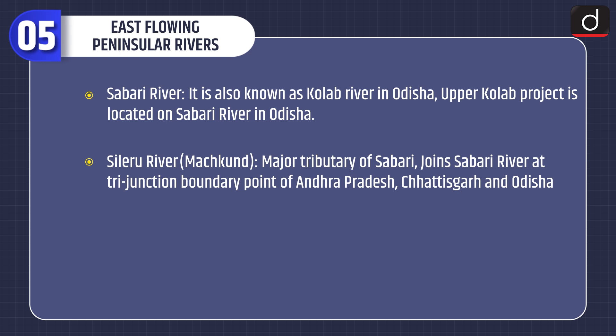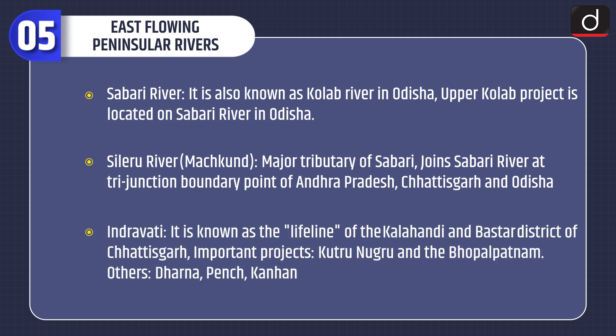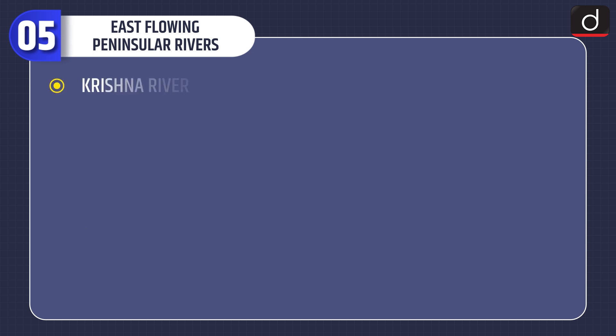Sabari river is also known as Kolab river in Odisha; the Upper Kolab project is located on it. Sileru river and Machkund are major tributaries of Sabari, joining at the trijunction boundary point of Andhra Pradesh, Chhattisgarh and Odisha. Indravati is also known as the lifeline of Kalahandi and Bastar district of Chhattisgarh. Important projects on Indravati: Kutru, Nuguru and Bhopalpatnam. Others include Dharna, Pench and Kanhan.